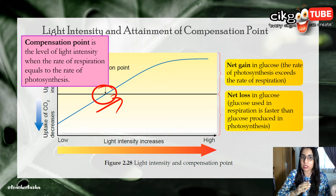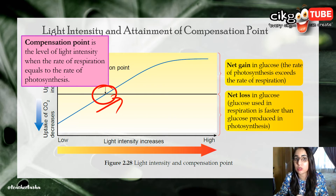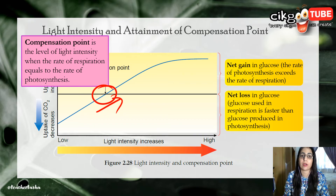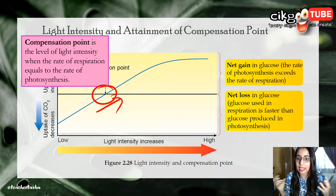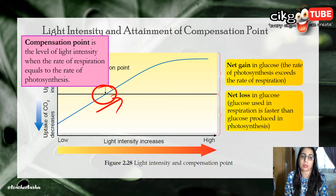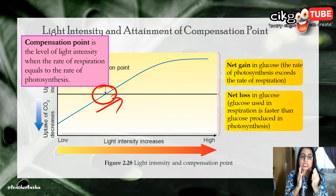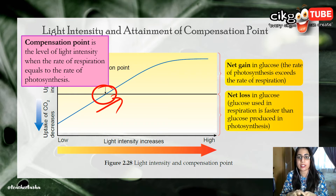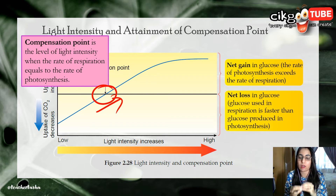When the rate of glucose production exceeds the rate of glucose use, the excess glucose is stored in the form of starch and is used for growth and other vital processes by the plant. To summarize: the compensation point is the level of light intensity at which the rate of respiration equals the rate of photosynthesis. When light intensity increases beyond the compensation point, the rate of photosynthesis will be greater than the rate of respiration.